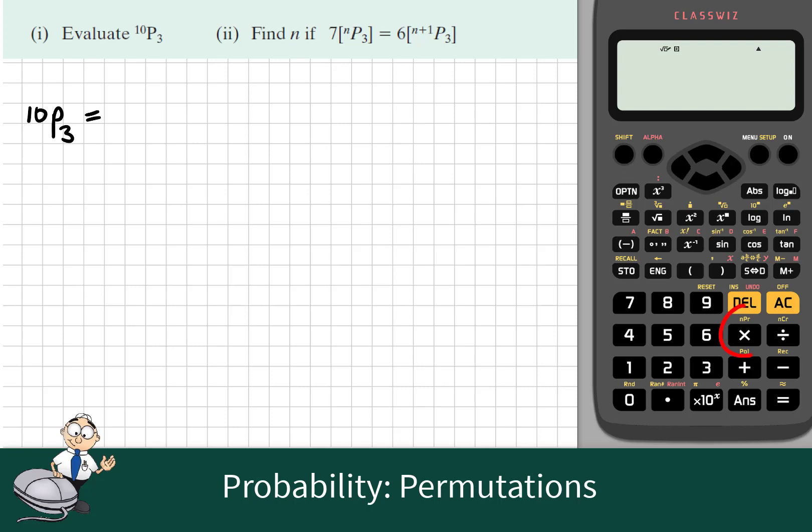We can use the calculator to evaluate this. We can write 10P3 in the calculator by pressing the permutation button, which is the second function button of the multiply sign on the Casio. So 10P3 equals 720. This is the same answer we get if we multiply 10 by 9 by 8.